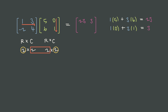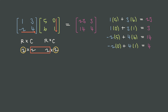Then we multiply the first row by the second column and get 1 times 0 plus 3 times 1, or 3 — that result goes in the first row and second column. Once we've multiplied the first row by every column in the second matrix, we move on to the second row. We get negative 2 times 5 plus 4 times 6, which goes in the second row and first column. Finally, we multiply the second row by the second column to get negative 2 times 0 plus 4 times 1, placed in the second row and second column.